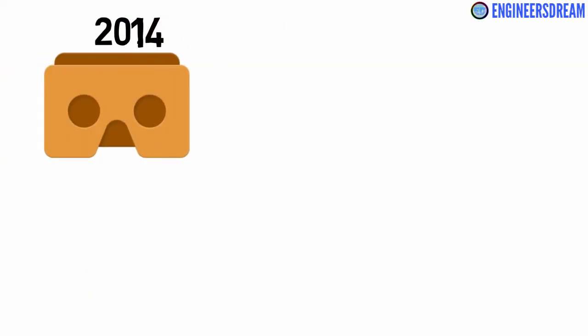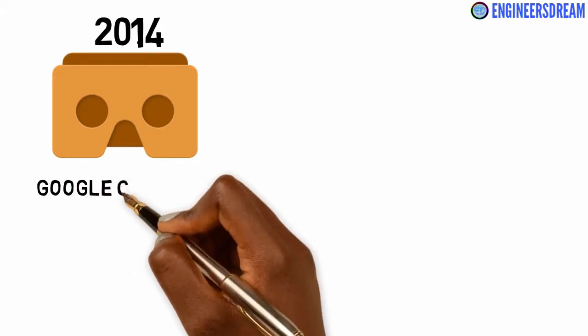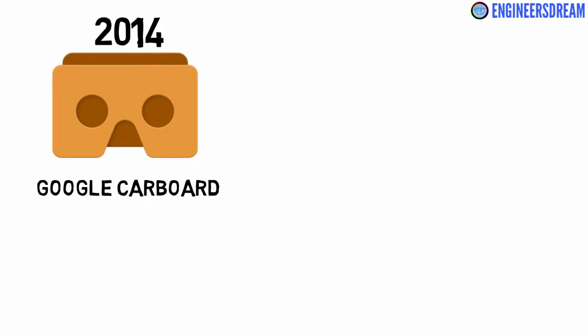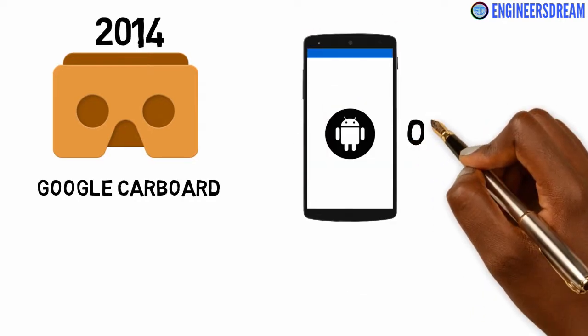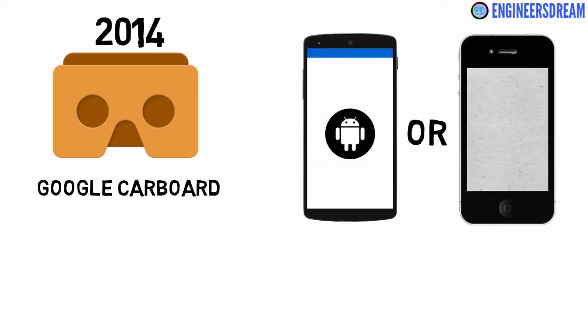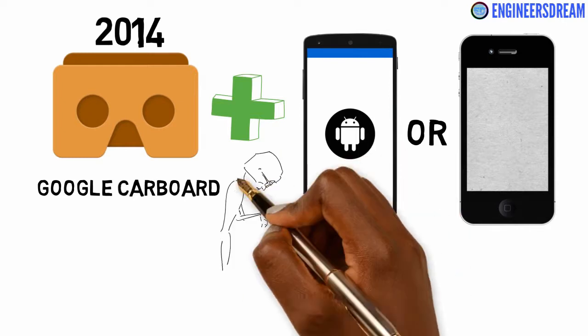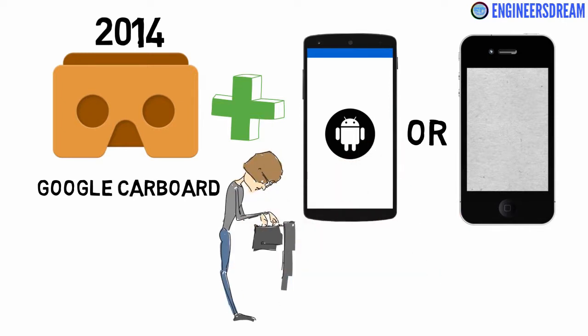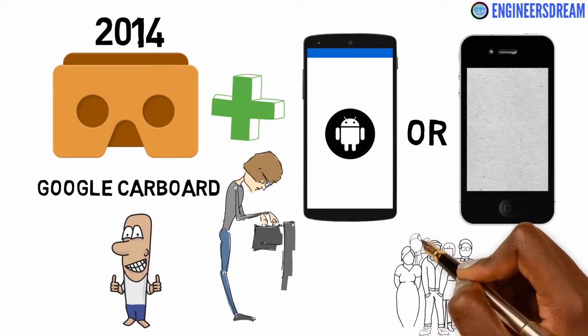But in 2014, Google did something totally out of the box — they released the Google Cardboard. So instead of buying a costly VR headset like the Oculus Rift, the user only requires an Android smartphone or an iPhone, as these phones already have some of the necessary sensors built in. The user simply needs to insert their smartphone inside the Google Cardboard to experience virtual reality. Way back in 2014 I designed my first Google Cardboard headset and my wish of experiencing virtual reality became a reality.